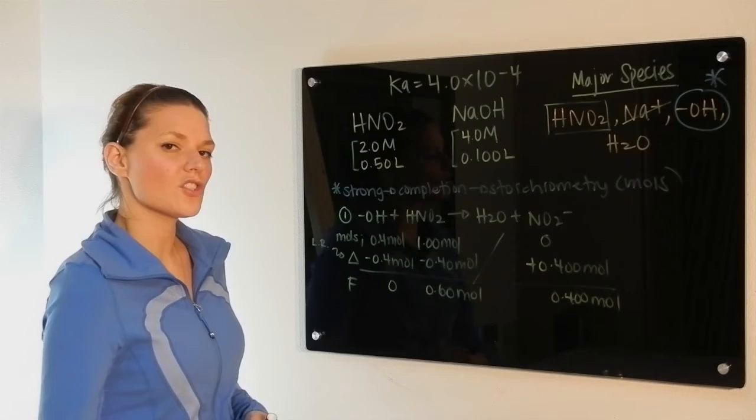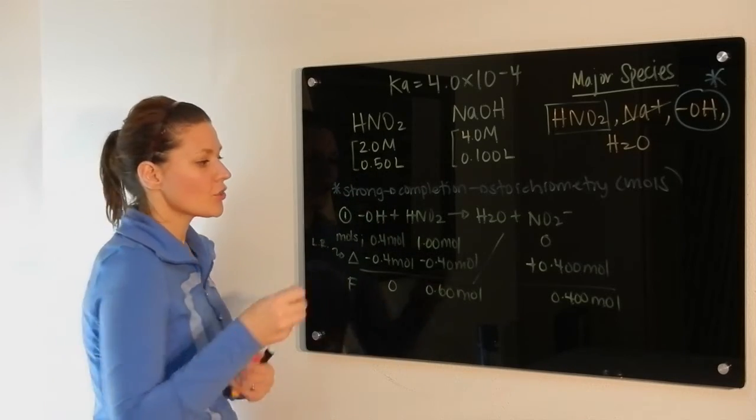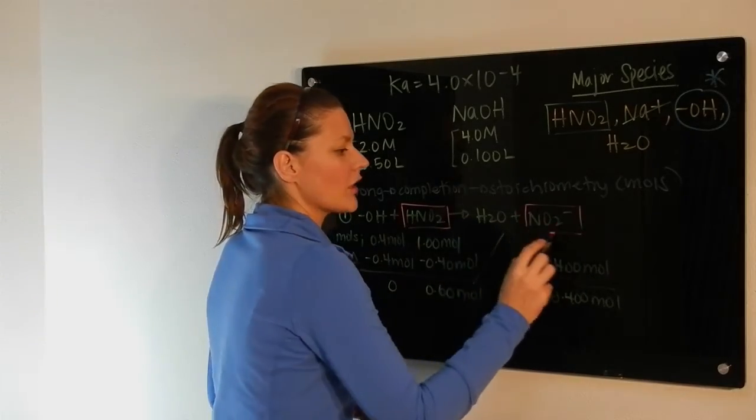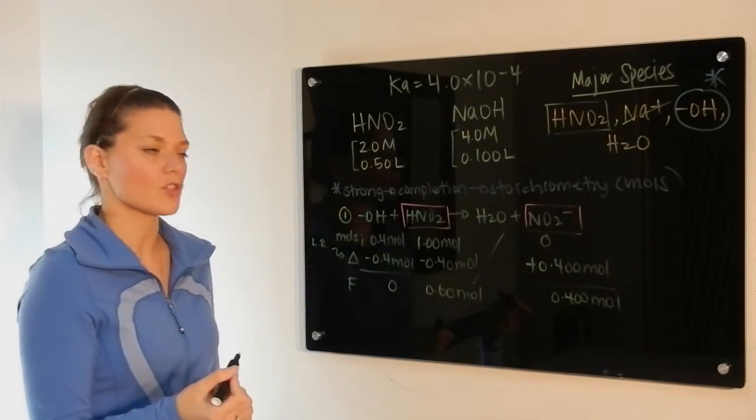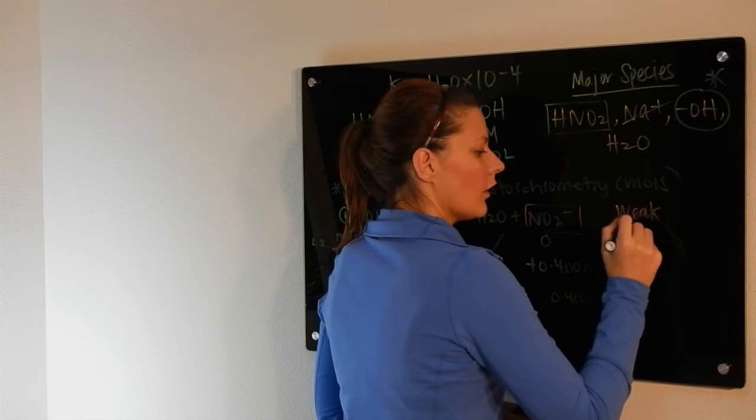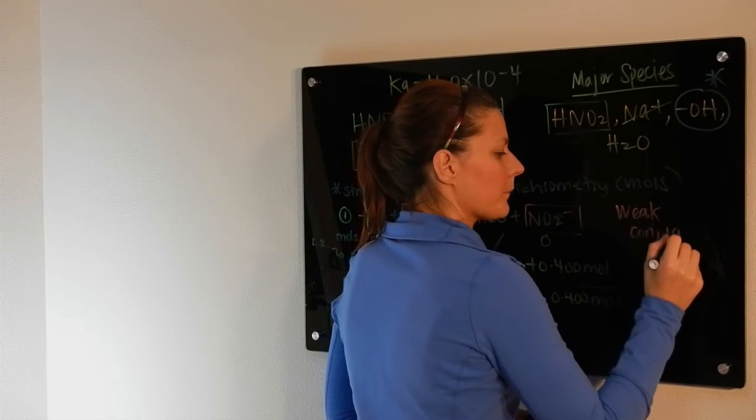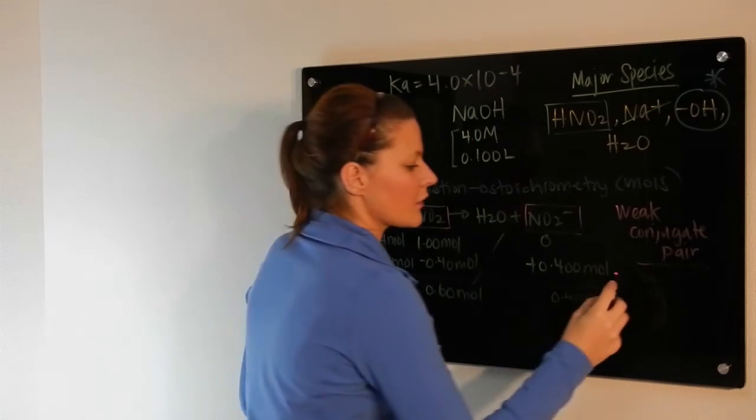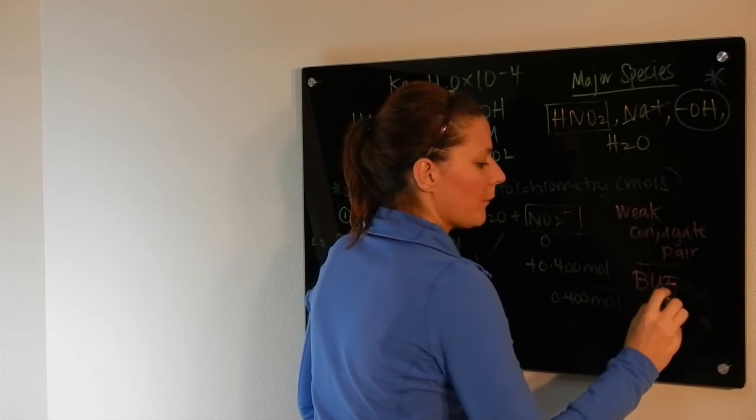Now what you need to do is look in the solution and see what's remaining. So if you notice here, we have some weak acid and we have its conjugate base in the same solution. We have a weak conjugate pair. And when you have a weak conjugate pair in the same solution, it is a buffer.